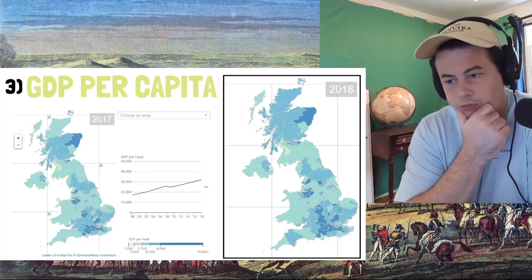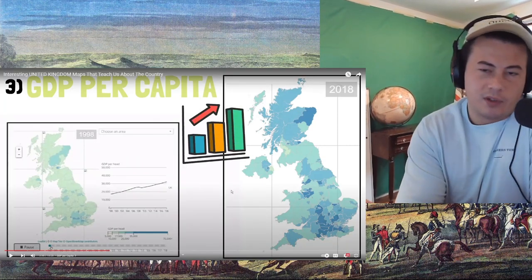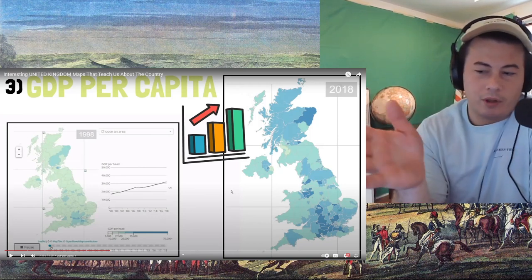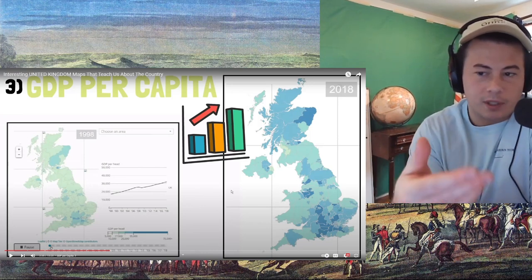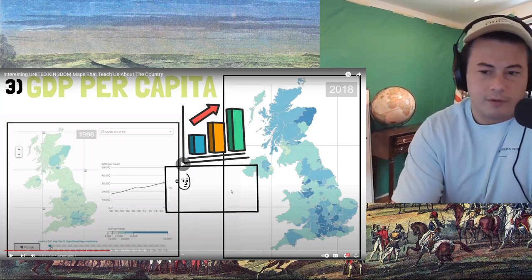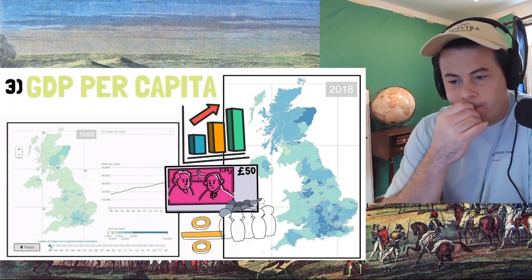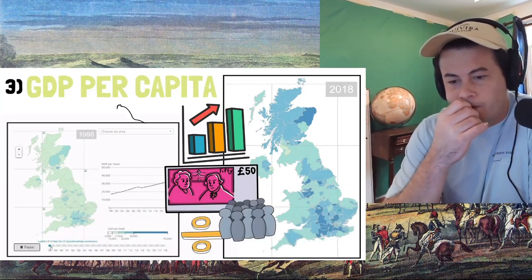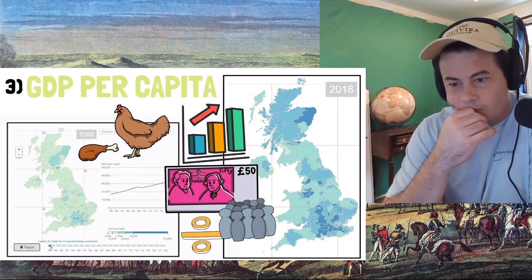Although keep in mind, GDP per capita doesn't necessarily tell us how rich each individual actually is — it just divides the total GDP of the area by how many people it has, not necessarily in a way it's actually divided. If a group of people has one chicken, that doesn't mean each of them gets one-fifth of the chicken to eat. Maybe two of them get 99% of the chicken, and the other three have to divide the remaining 1%.